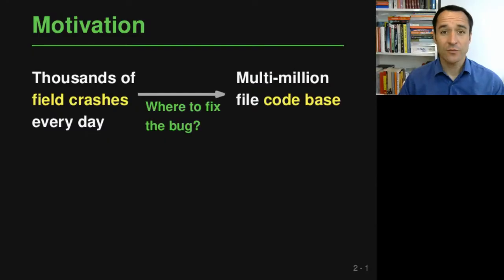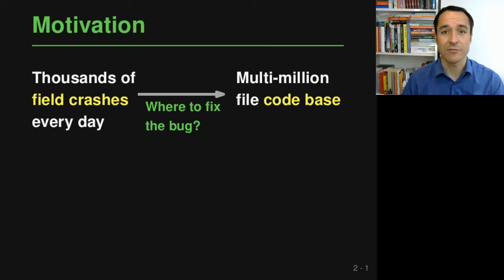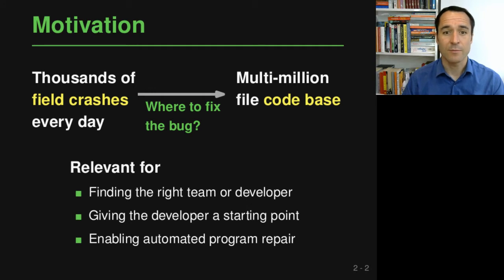The motivation for this work is that deployed software sometimes crashes. And if you have software that is used by many people, then you may experience thousands of field crashes every day. So the question is how to find out where to fix the bugs that caused these crashes, given a large code base. One reason this is relevant is that it will help you to find the right team or maybe even developer responsible for fixing this kind of bug.